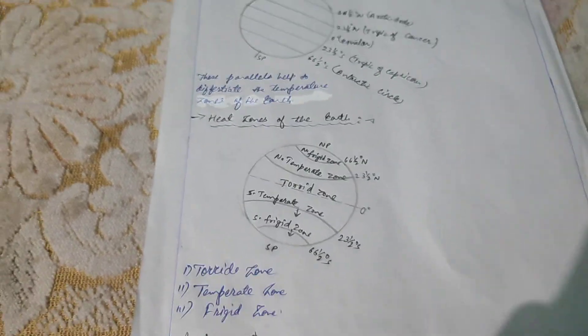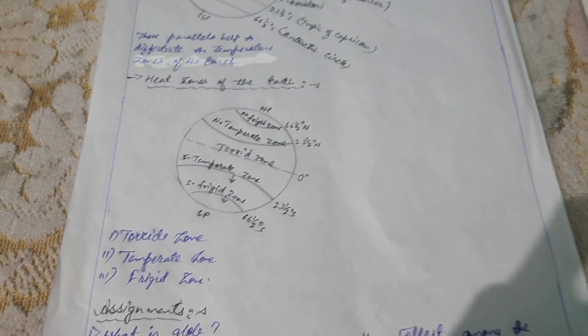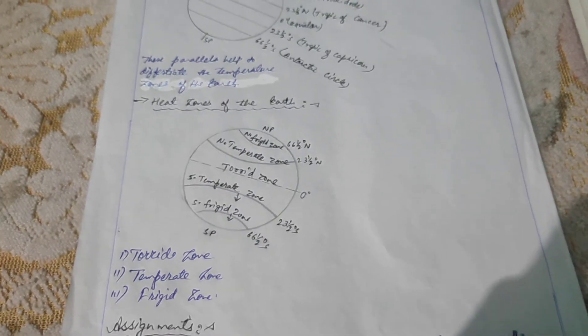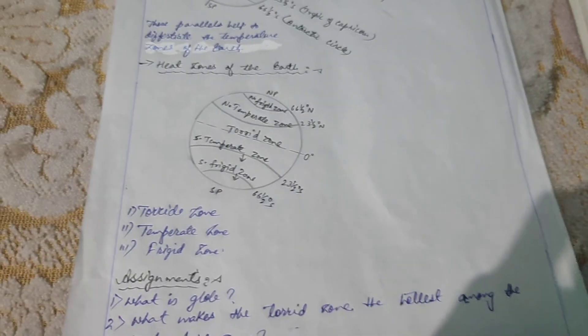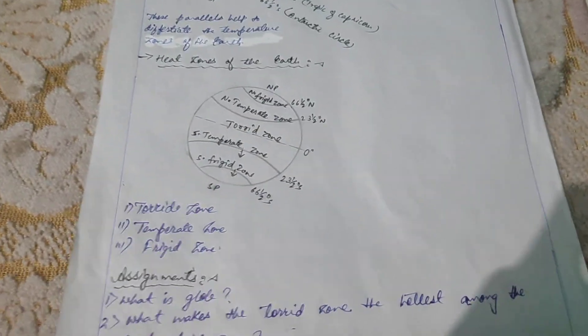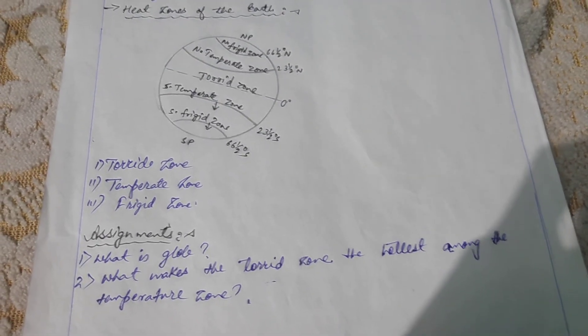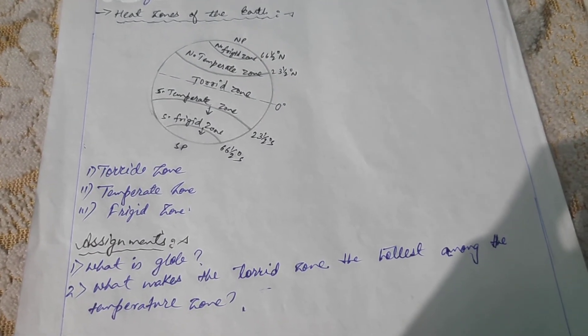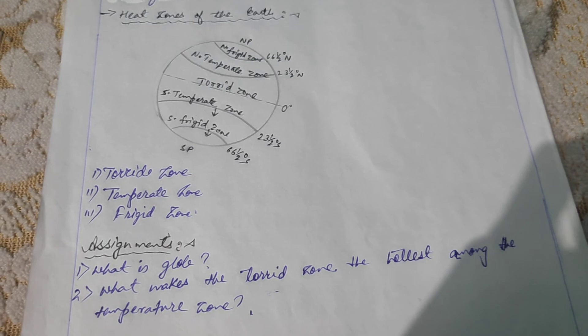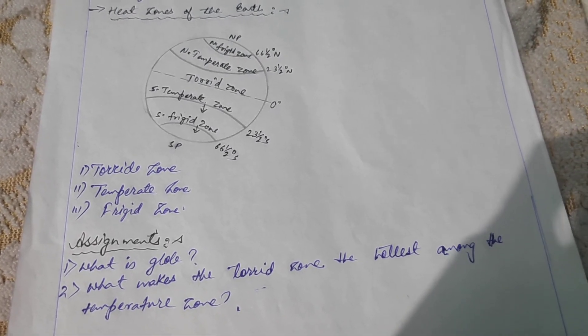So students, this much for today only. The next part, the rest of the part we will discuss in another session. There is some homework for you. You have to do it at home. Note down the assignment. What is globe? What makes the torrid zone the hottest among the temperate zones? You have to find out the answer of these questions.